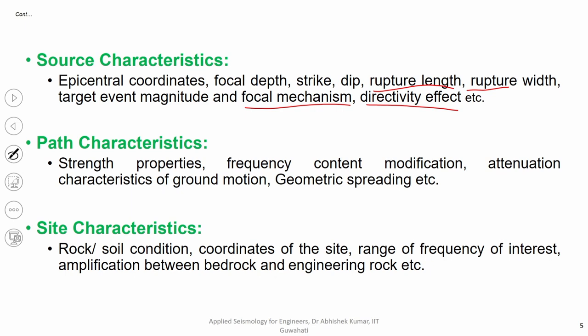Coming to path characteristics: what is the in-situ strength of the path? Path property includes frequency content modification — something generated at the source continuously propagates through a medium offering resistance because it also has shear strength parameters. Third is attenuation: as it moves away from the source it expands in three-dimensional space, there will be loss of energy; heterogeneity present in the medium and heat generated because of particle oscillation — all will be responsible for modification or attenuation in ground motion characteristics. Geometric spreading refers to the seismic waves propagating in three-dimensional space.